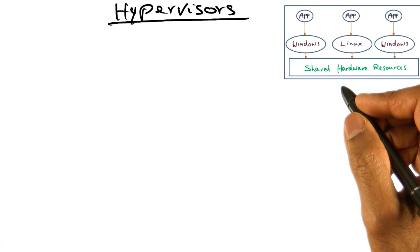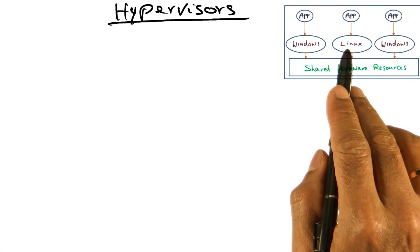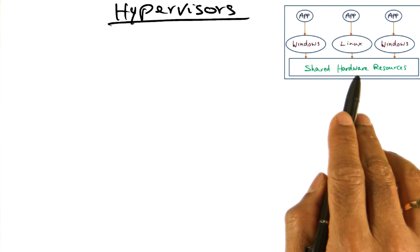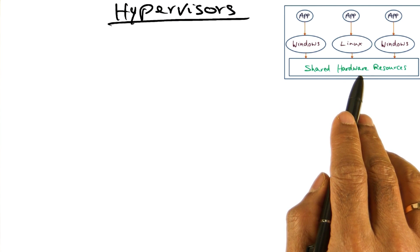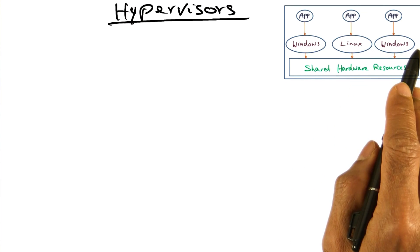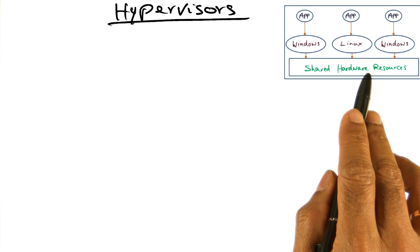Now, returning to our look inside the black box, notice how we have multiple operating systems running on the same shared hardware resources. Now, how is this possible? How are the operating systems protected from one another, and who decides who gets the resource and at what time?